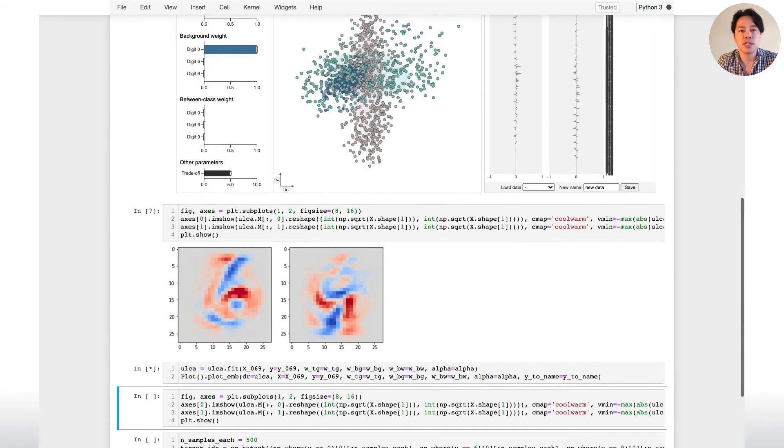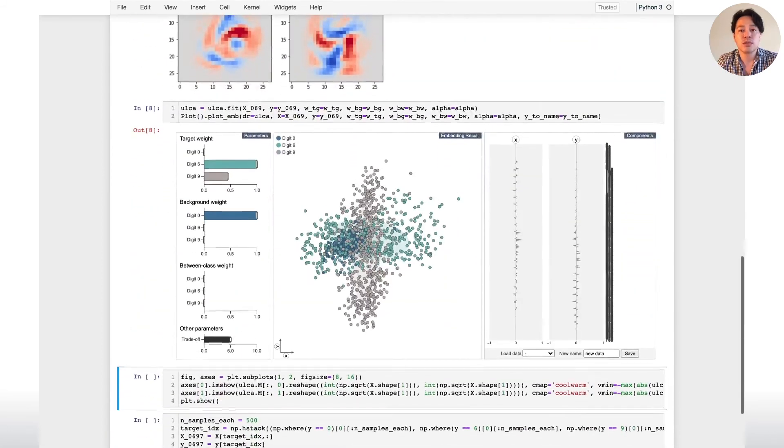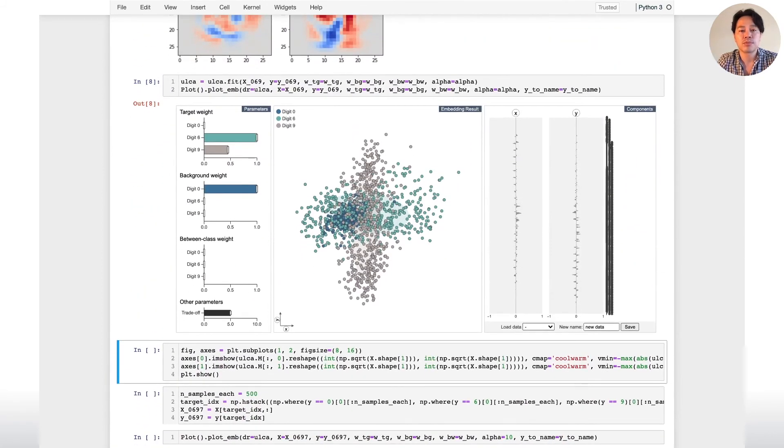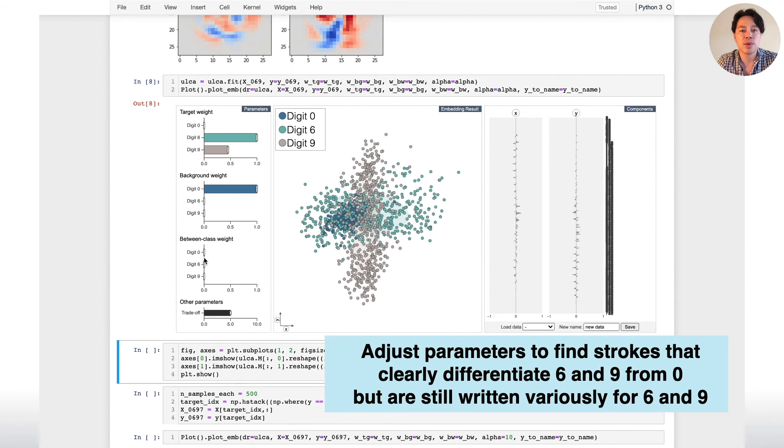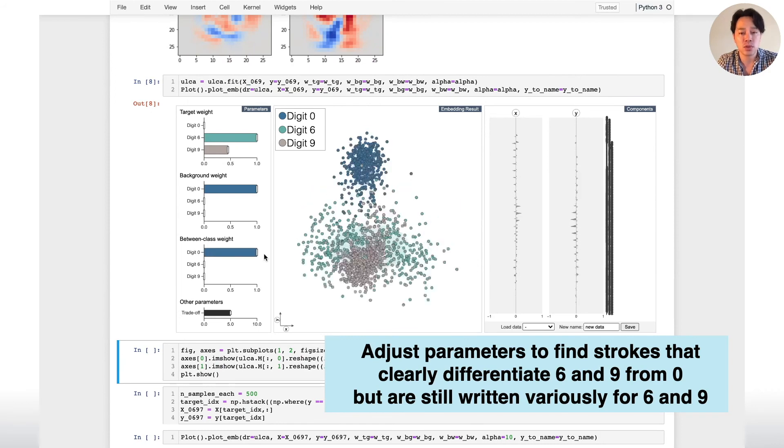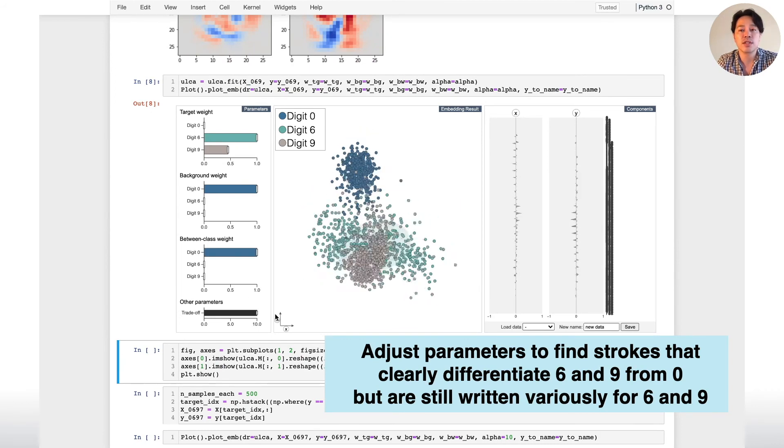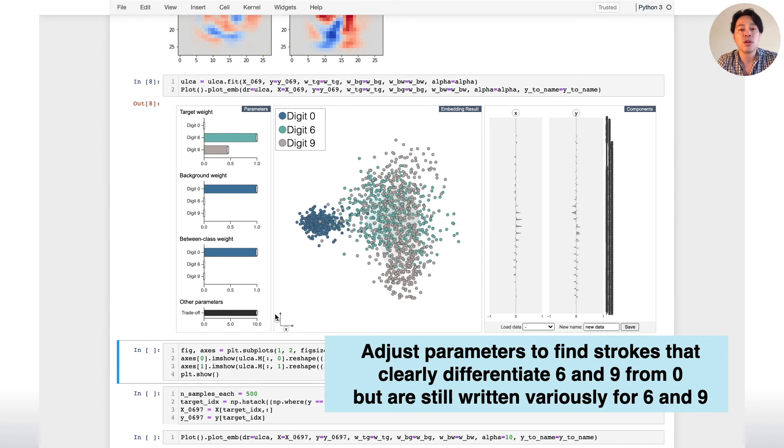To keep the current result, we visualize the same result in a defined output cell. And adjust the parameters to find strokes that clearly differentiate 6 and 9 from 0 but are still written variously for 6 and 9.